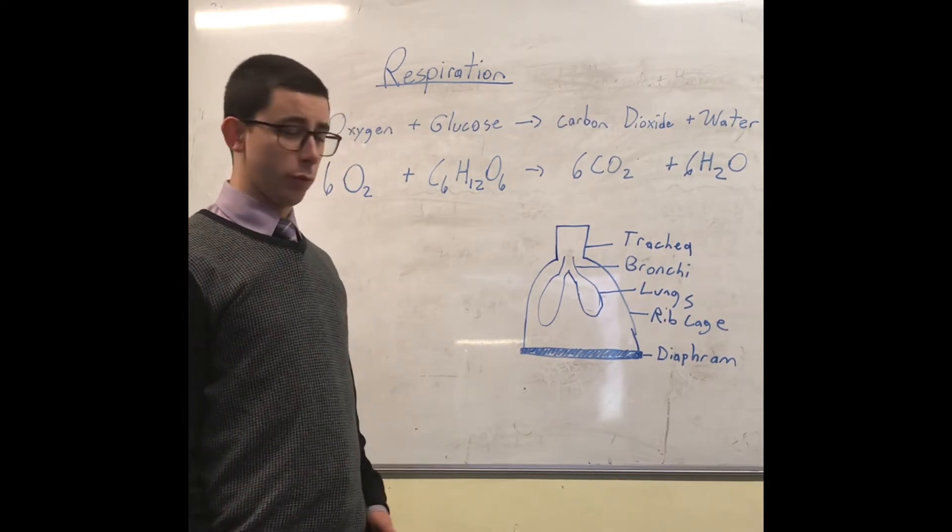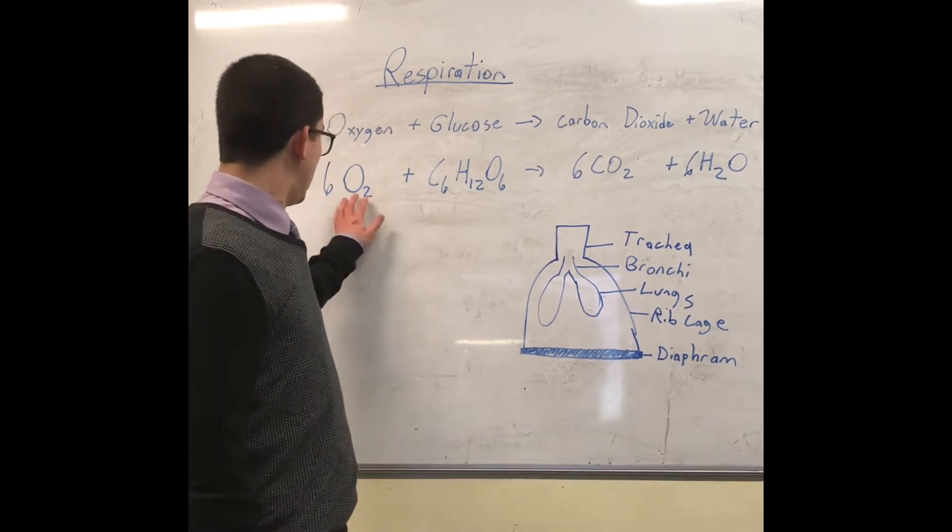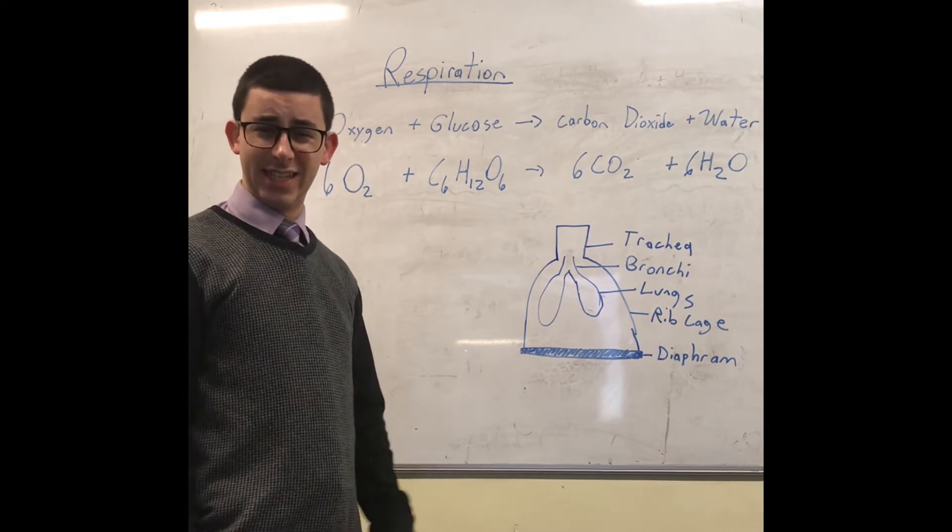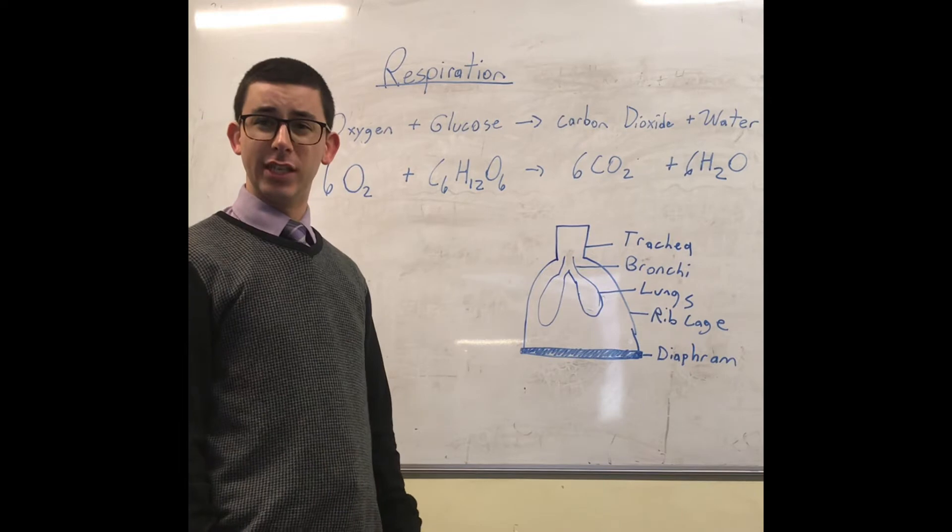Now it is very important to say that oxygen, when it's in our bloodstream, travels on red blood cells on a protein called hemoglobin.